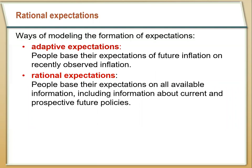Doing that is using rational expectations — taking in all available information. And so if we assume that economic actors use rational expectations, we're going to say that they take in all information about current and future policies when they make their decisions. That can have a significant effect on the Phillips curve and the sacrifice ratio.